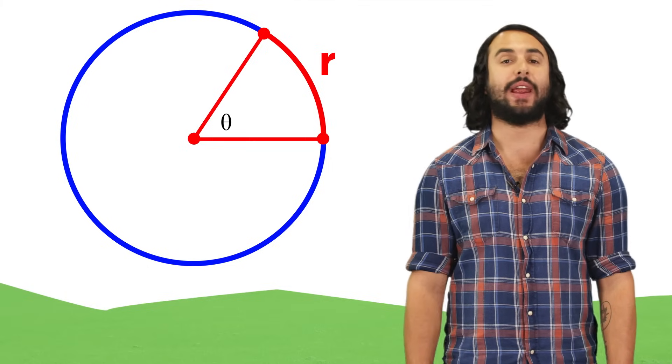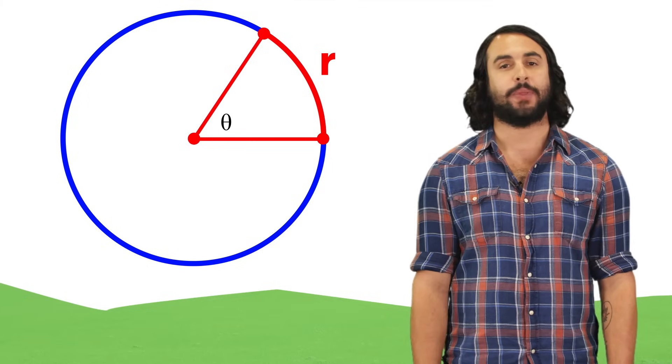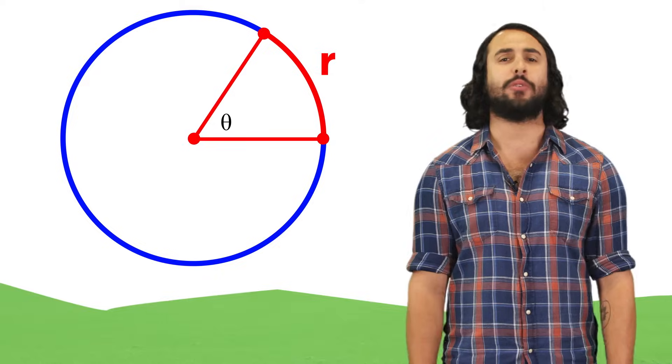In the last clip, we introduced radians and drew some circles. But trigonometry is about triangles, so where do those come in?